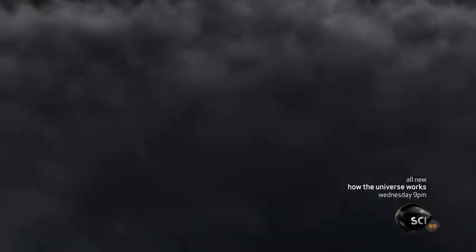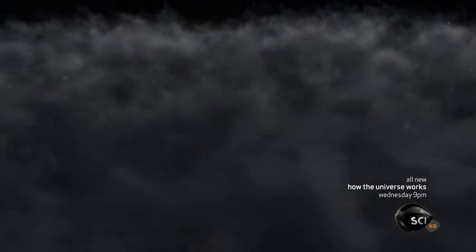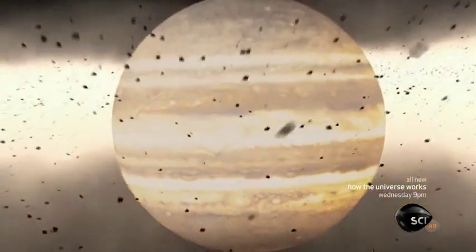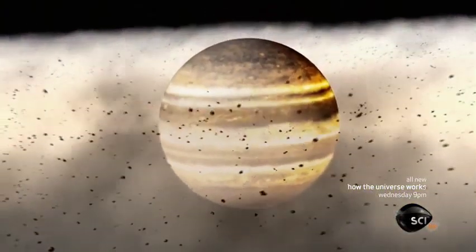The planet was not always this way. Turn back the clock 1.5 billion years. Choro-7b is forming.